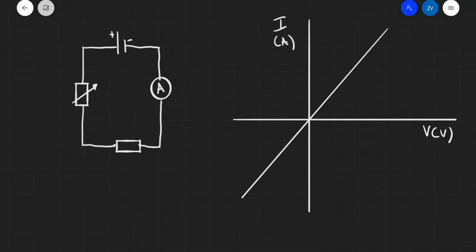Today we are going to be looking at the IV characteristics of a resistor and a filament lamp. Let's get started with the resistor.